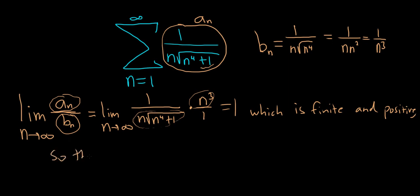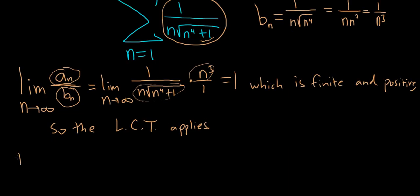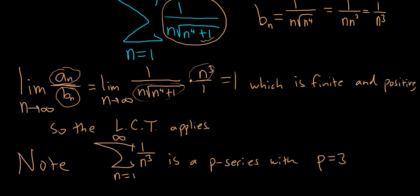So now we just have to explain what happens to the sum of the b's. When we add up all the b's, as n runs from 1 to infinity, we look at 1 over n cubed. This is a p-series with p equals 3, which is bigger than 1. When p is bigger than 1, we have convergence. So it converges by the p-test.